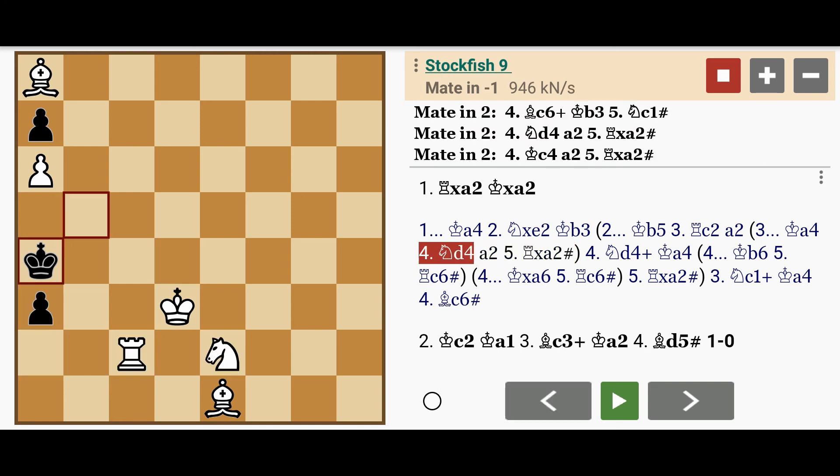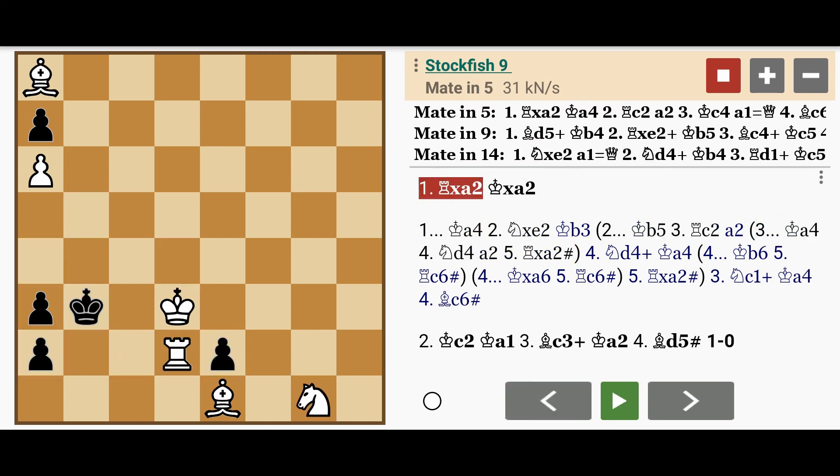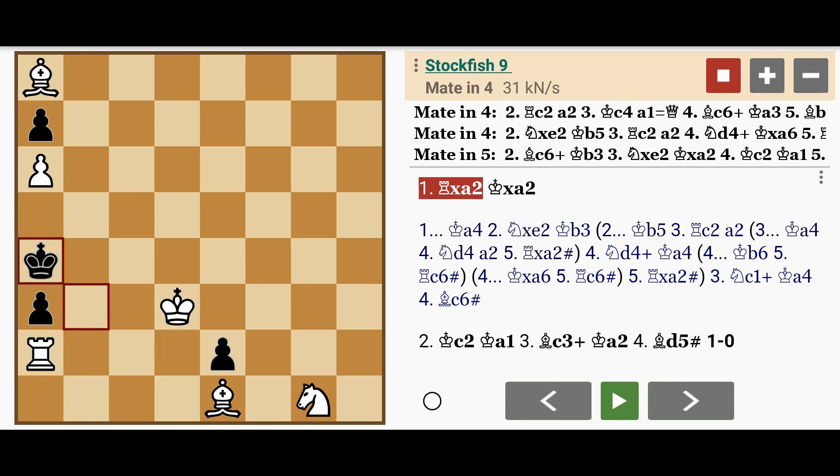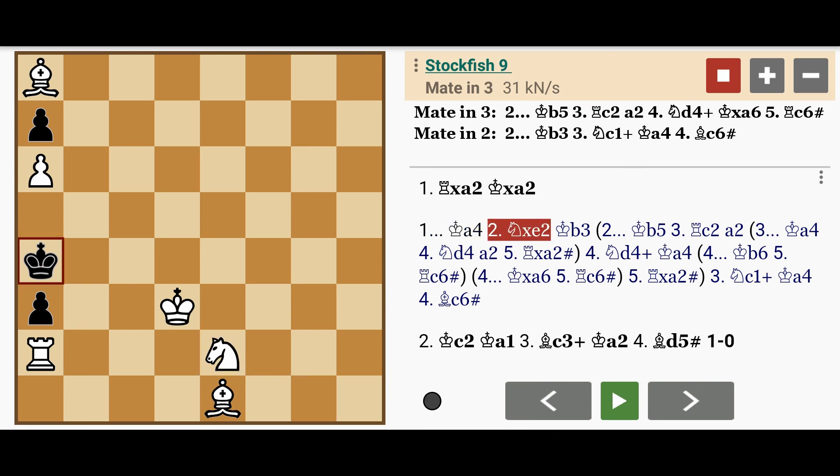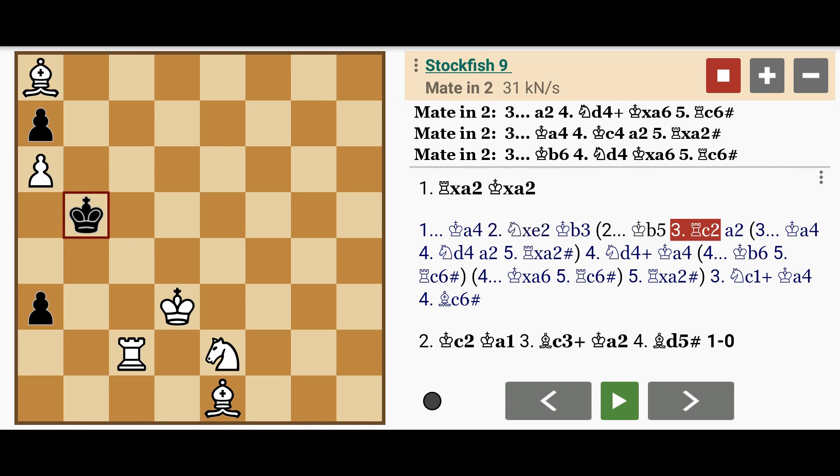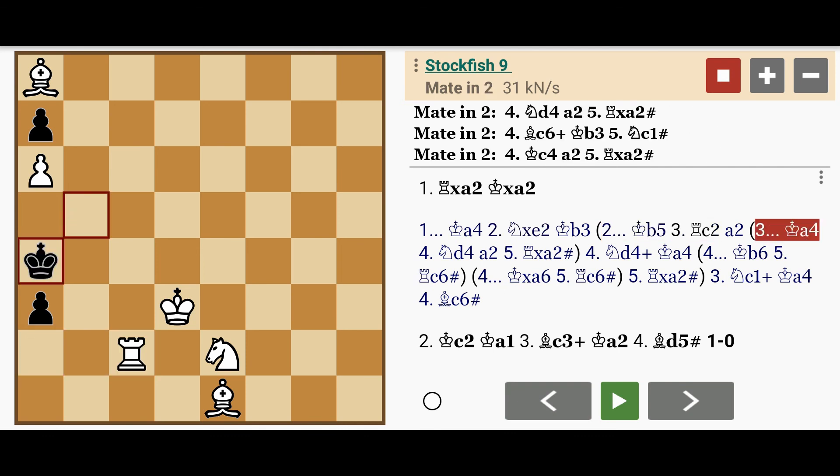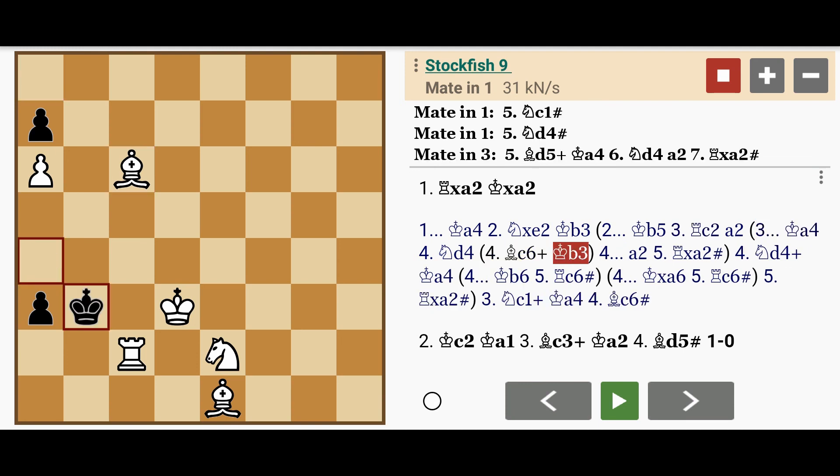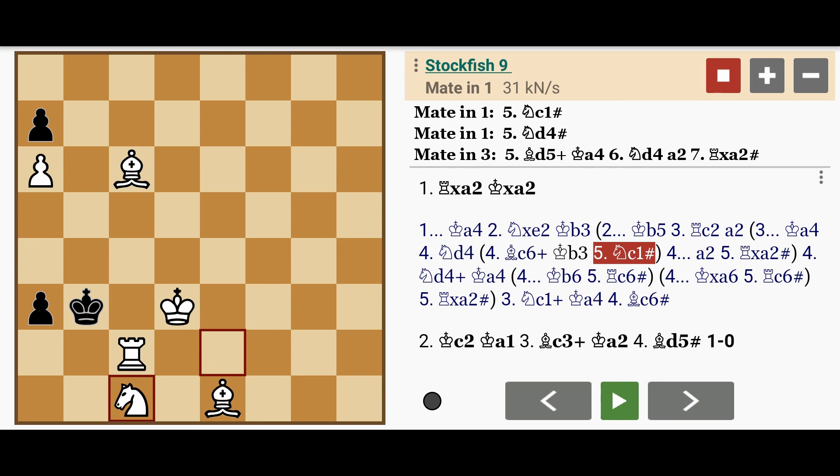But let's rewind all the way back, and I'll show you just the main line. So rook captures a2, king to a4, knight captures e2, king to b5, rook to c2, king to a4, bishop to c6 check, king to b3, and knight to c1 mate. This is yet another variation.